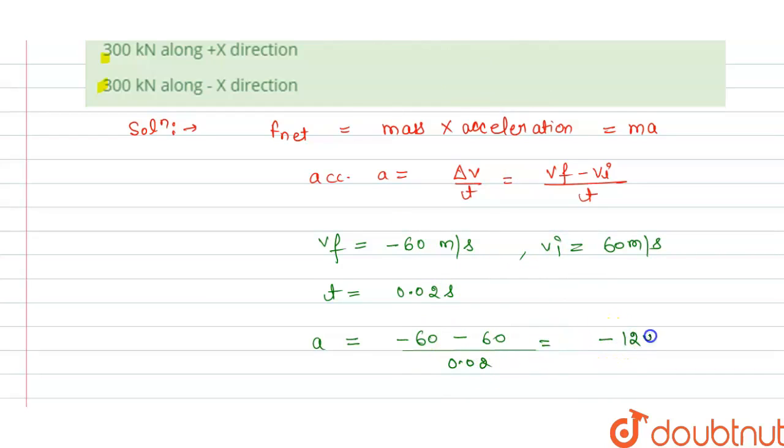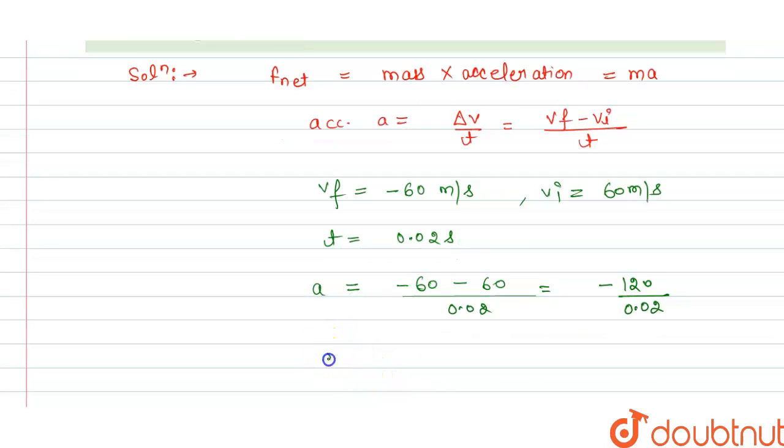From this we can write here, this is 120 divided by 0.02 and we have the acceleration is minus. This will become 120 multiplied with 1 and 2 and this is divided by 2.